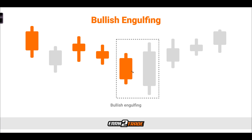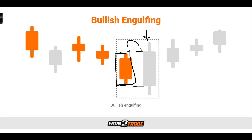Next up, we have the bullish engulfing candle. It looks like a big candle gobbling up the candle next to it — that's where the 'engulfing' portion comes from. What we need is a big bullish candle gobbling up a bearish candle before it. The entire previous candle must be contained within the body of the big engulfing candle. The body opens at the bottom, closes at the top, and the bottom and top completely encase all price movements from the previous candle. This bullish engulfing two-candle setup has an expected bullish outcome thereafter.